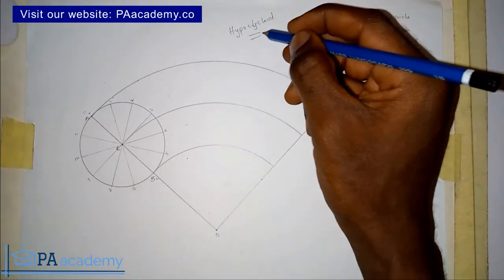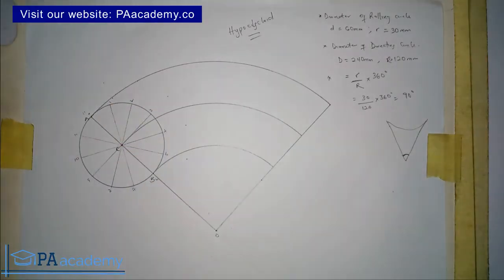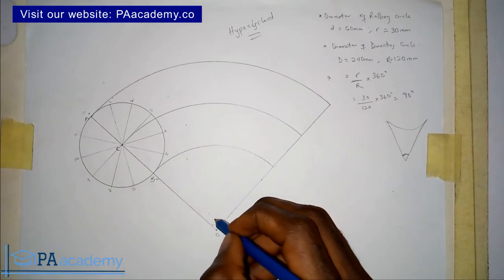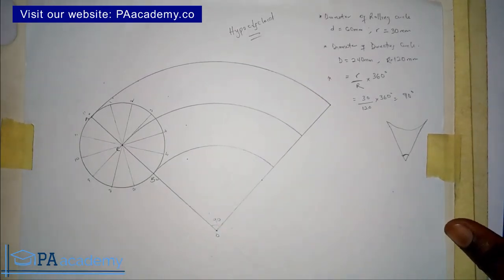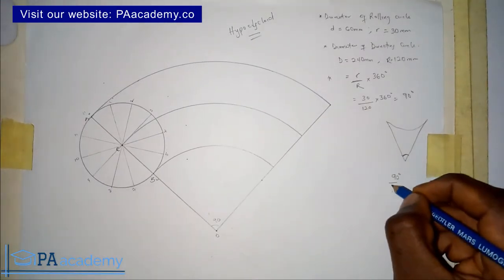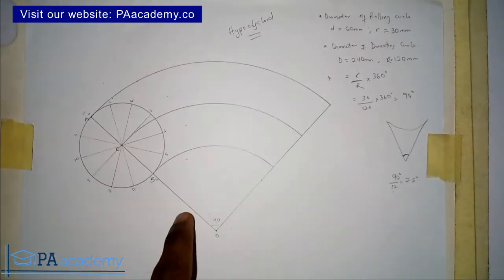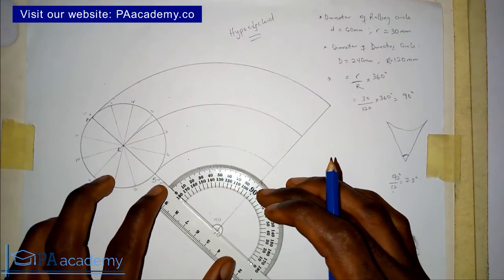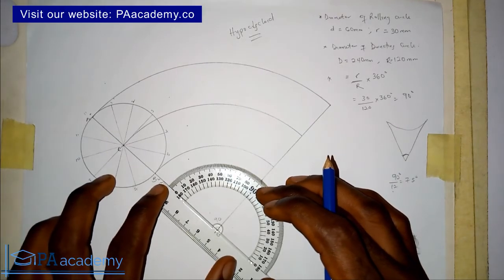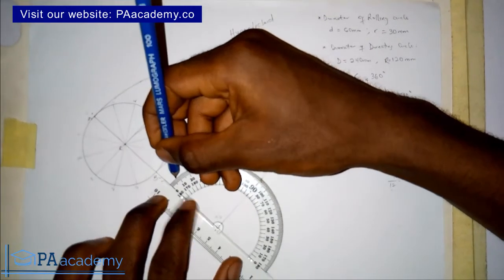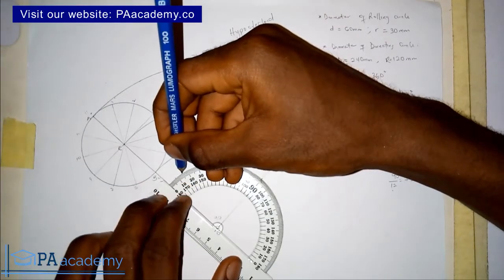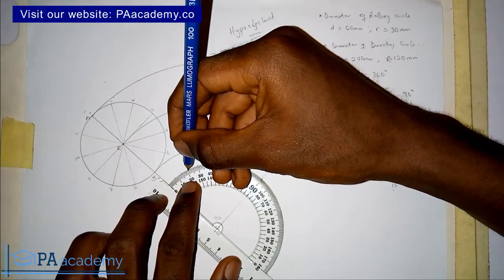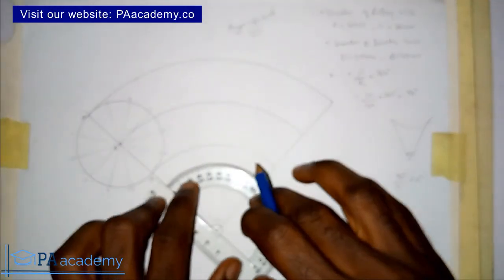Now from point O, divide the 90-degree angle into 12 equal parts. That means 90 degrees divided by 12, which equals 7.5 degrees per division. Bring in the protractor and start marking points at intervals of 7.5 degrees.